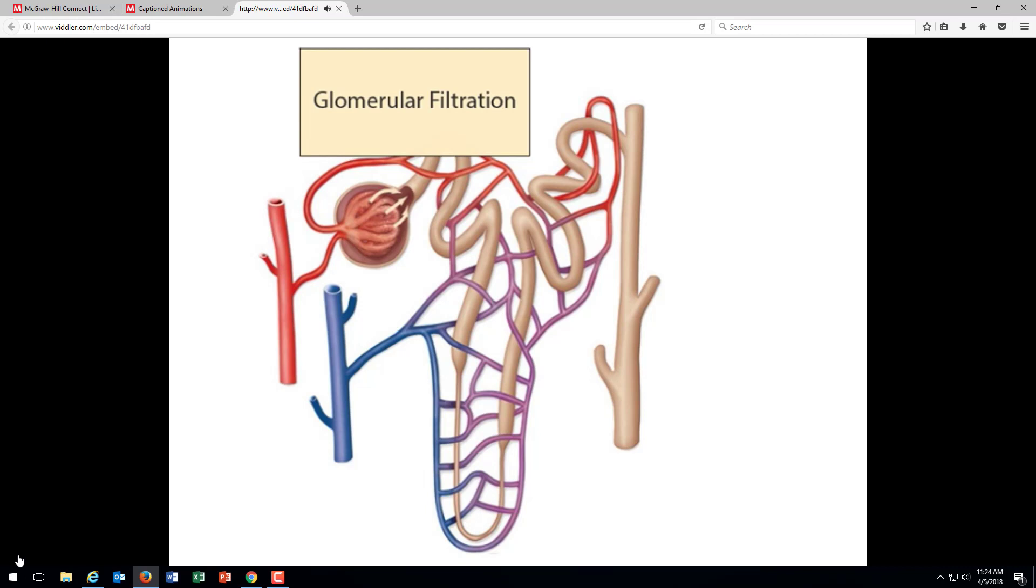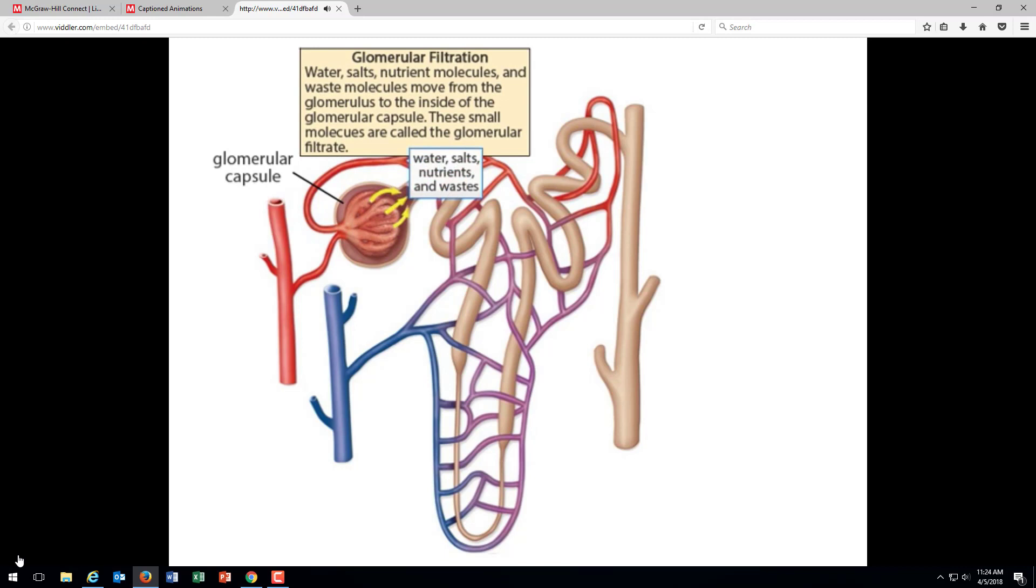The first stage of urine formation, glomerular filtration, occurs within a region of the nephron called the glomerular capsule. The purpose of this stage is to remove small molecules, water, and salts, collectively called the filterable components, from the blood. Let's take a closer look at what is happening inside the glomerulus.